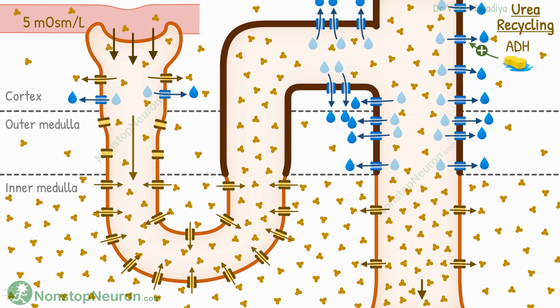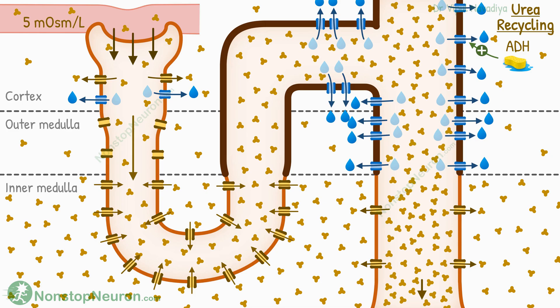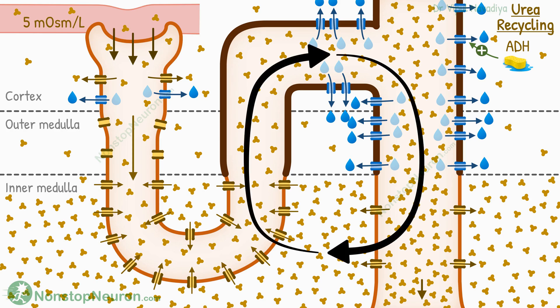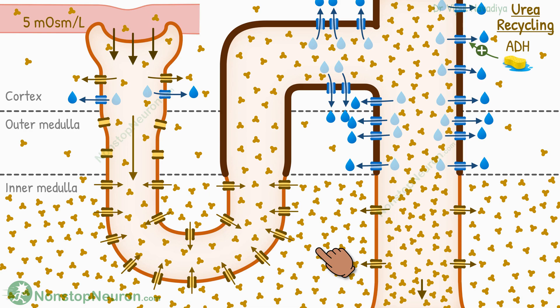Now this fluid, with increased urea, enters the impermeable part again. In the collecting duct, the same process we saw earlier is repeated — that is, water reabsorption alone, without reabsorption of urea, concentrates the urea even further. So again, more urea is reabsorbed at the inner medullary collecting duct. Then the same cycle is repeated. With each cycle, more and more urea is trapped in the interstitium, so its concentration keeps increasing.